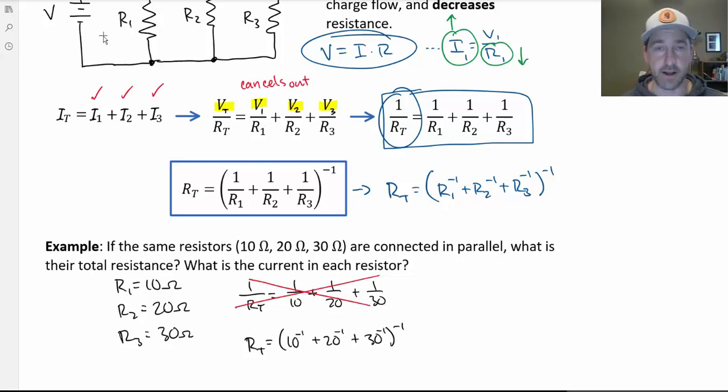Now for this, you're going to have to break out your calculator. I've got my graphing calculator right here. 10 negative 1 plus 20 negative 1 plus 30 negative 1, end parentheses, all that to the negative 1 power. And I get a resistance of 5.45 ohms, which is considerably less than any one of those resistors.